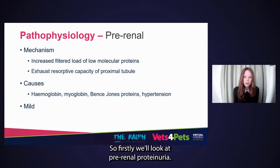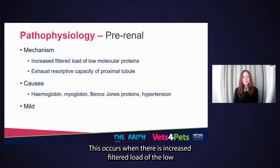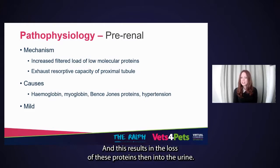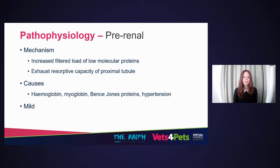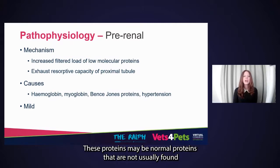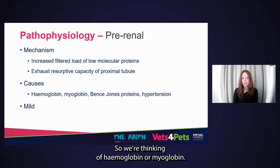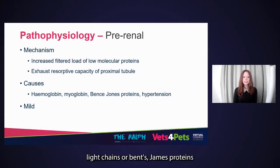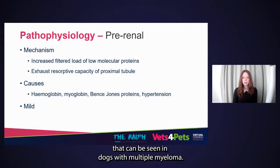Firstly, pre-renal proteinuria. This occurs when there is an increased filtered load of low molecular weight proteins. Essentially, the resorptive capacity of the proximal tubules becomes exhausted, and this results in the loss of these proteins into the urine. These proteins may be normal proteins not usually found free in the plasma, such as hemoglobin or myoglobin. Alternatively, they could be abnormal proteins such as immunoglobulin light chains or Bence-Jones proteins, which can be seen in dogs with multiple myeloma.